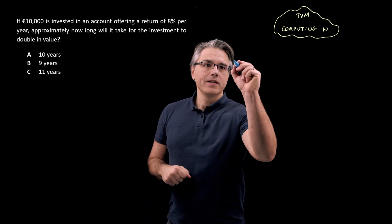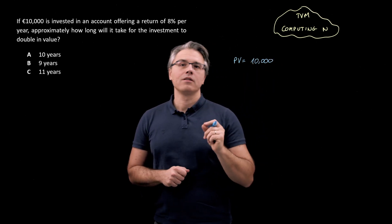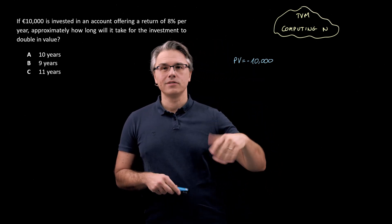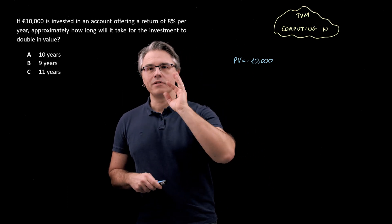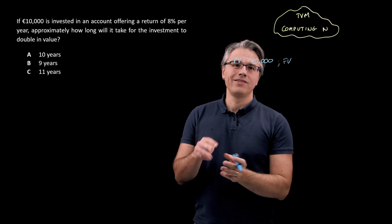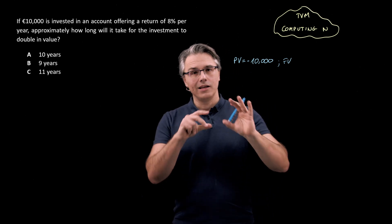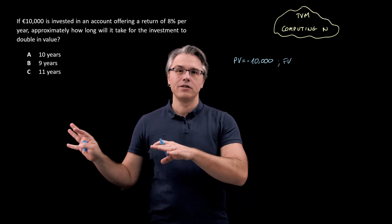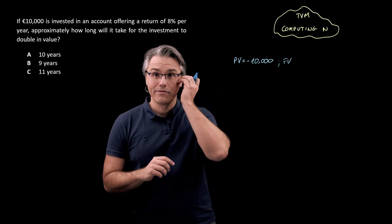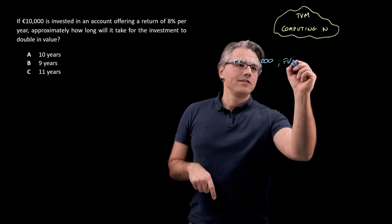Our PV is going to be 10,000 — present value. However, what I'd like you to do is make this negative. So when providing the relevant input, enter 10,000 followed by the plus/minus key. And then obviously future value will be double that amount. You can provide the inputs in any order — your calculator will get it right. So FV is going to be twice as much, which is 20,000.